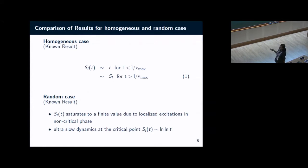On the other hand, in a random case or disordered case where you have a localized eigenstate, it is found that the entanglement entropy actually immediately saturates to some finite value. On the critical point, you have an extremely slow dynamics of this entanglement entropy.